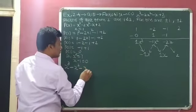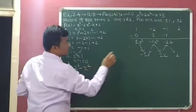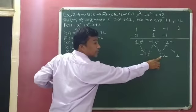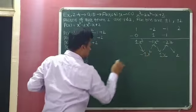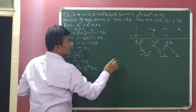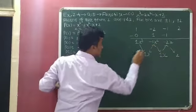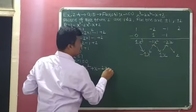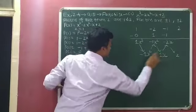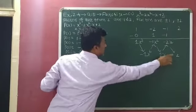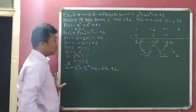So minus x square. Then 1x — normally we don't write 1, so only x. Then minus 2x, so minus 2x. And then plus 2.